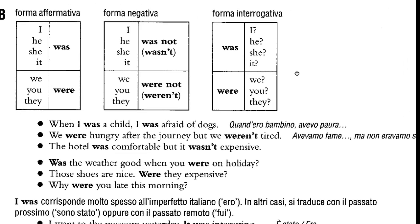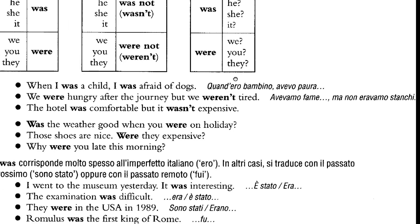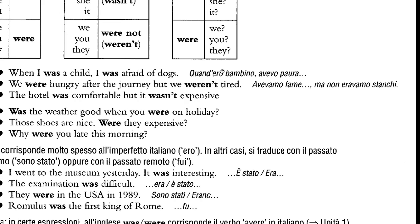For the plural subjects: we were, you were, they were. The negative: we were not / we weren't, you were not / you weren't, they were not / they weren't. And the questions become: were we, were you, were they.